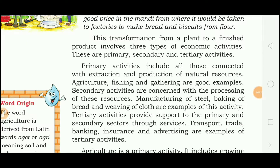Transformation from plant to a finished product involves three types of economic activities. These are primary, secondary and tertiary activities.